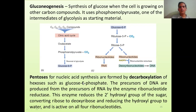Pentoses are needed for nucleotide synthesis. They are formed by the decarboxylation of hexoses such as glucose-6-phosphate — releasing one CO2 molecule, leading to the formation of ribulose-5-phosphate, and rearrangement leads to ribose-5-phosphate. This ribose-5-phosphate can be used for the formation of RNA. Ribose-5-phosphate can also be reduced by NADPH to deoxyribose-5-phosphate, which acts as the backbone molecule for DNA synthesis, where the 2'-hydroxyl of the ribose nucleotide is converted to deoxyribose.